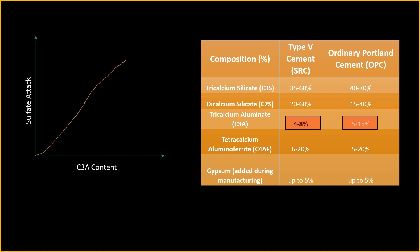Comparing the general composition of compounds present in SRC and OPC as per ASTM recommendations, it is important to note that the composition ranges for both Type 5 cement and OPC depend upon the specific manufacturer and regional standards. The percentage of tricalcium aluminate in SRC is far lower compared to what ordinary Portland cement demands. Lower C3A content minimizes the risk of sulfate-related deterioration, as C3A is highly reactive with sulfates.